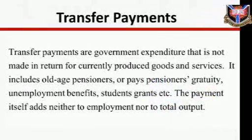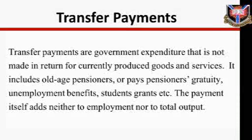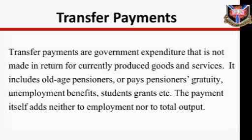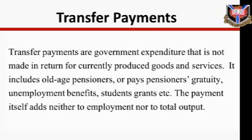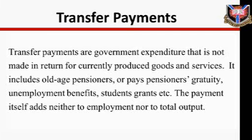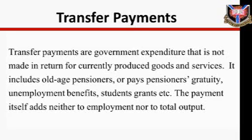Transfer payments are government expenditure that is not made in return for currently produced goods and services. If government makes a payment to an old-age pensioner or pays a pensioner's gratuity, the government is not purchasing any currently produced goods and services. The payment itself adds neither to employment nor total output. Other examples of transfer payments include unemployment benefits, student grants, and interest payments on the national debt. Government spending is spelled out in the budget and is therefore assumed to be predetermined — meaning government expenditure is autonomous.